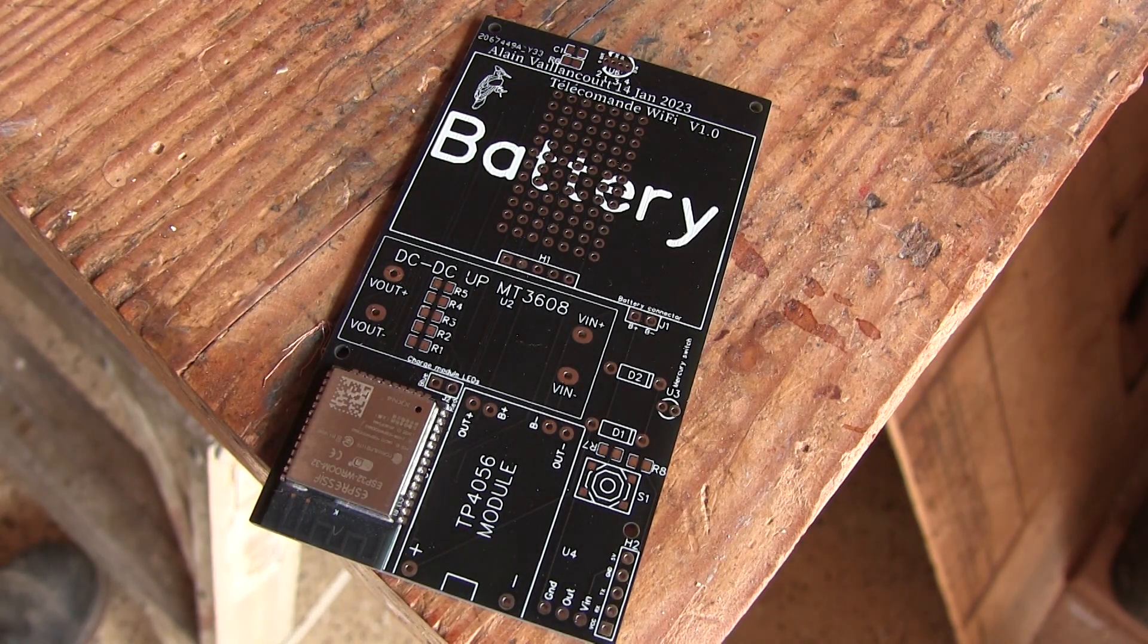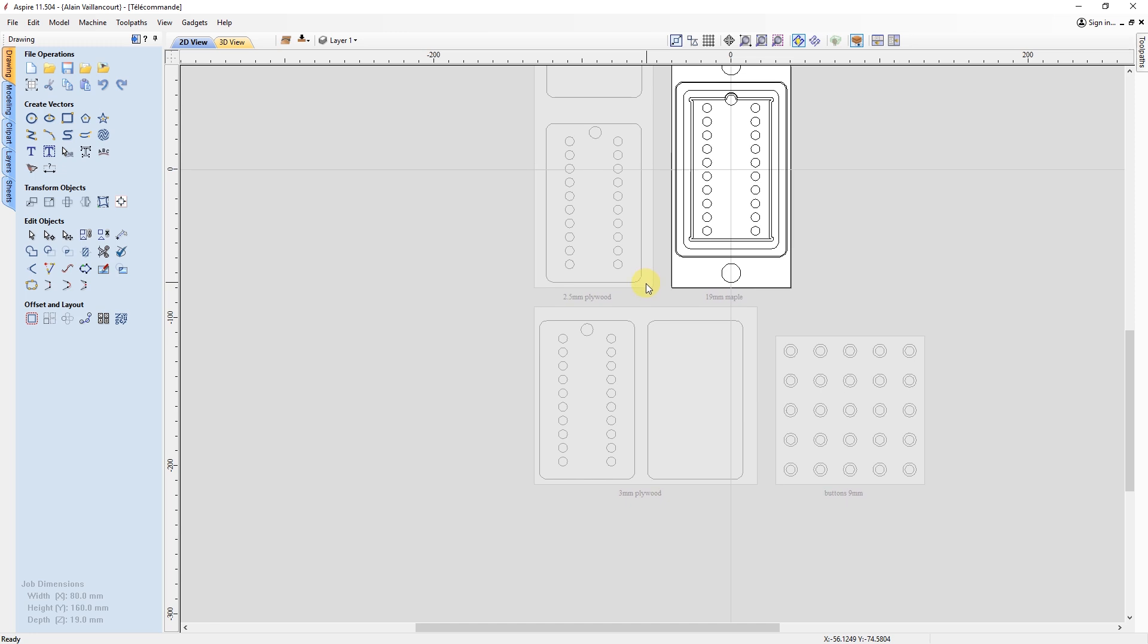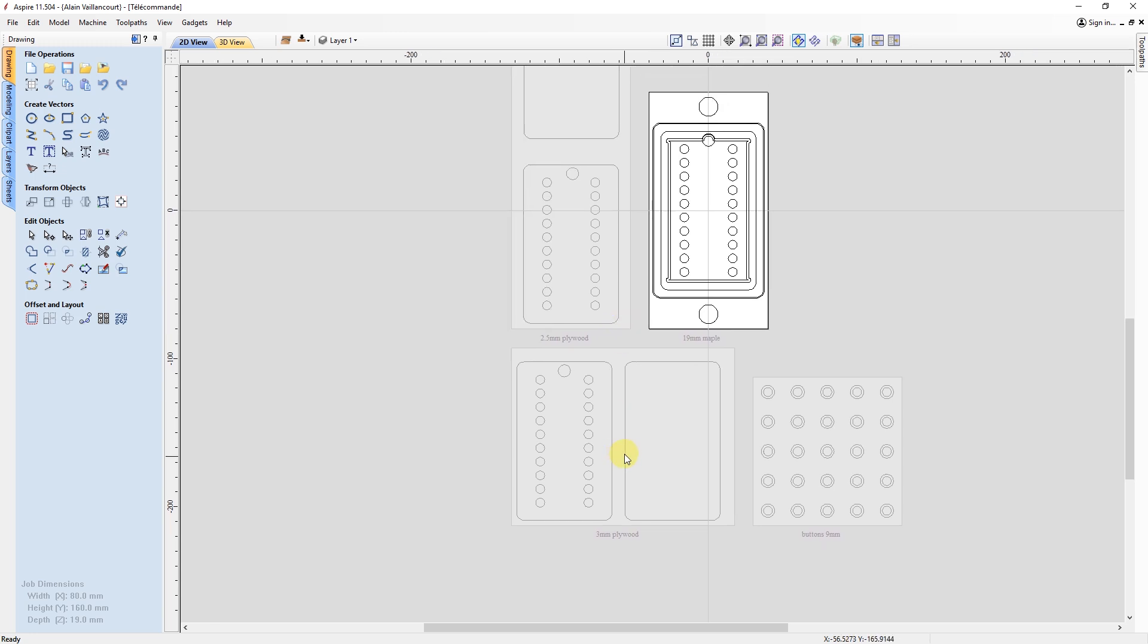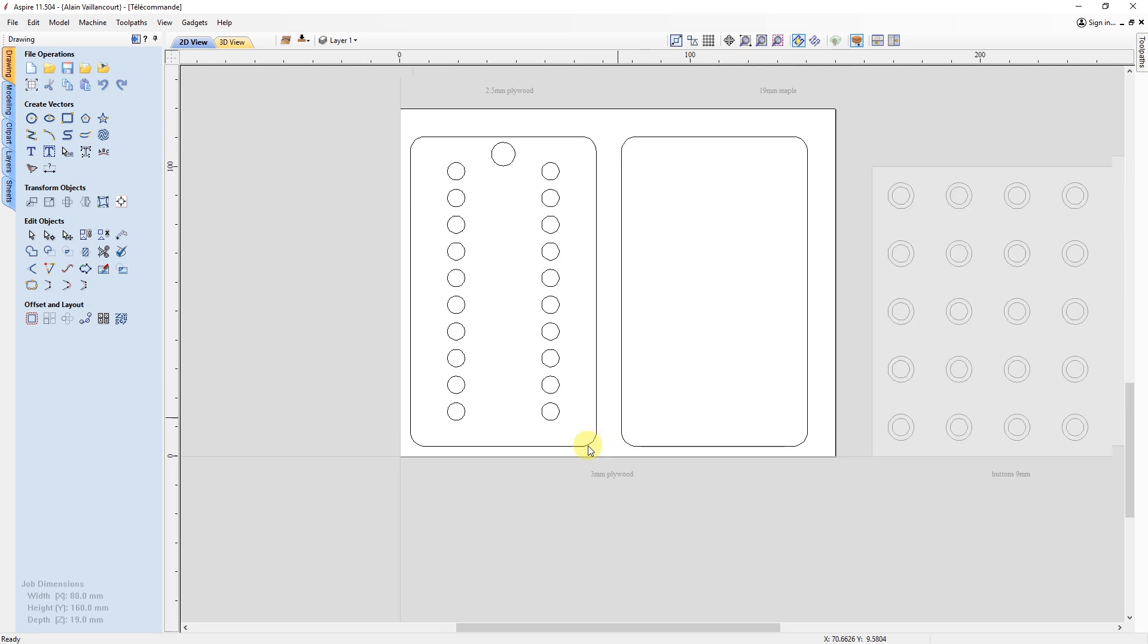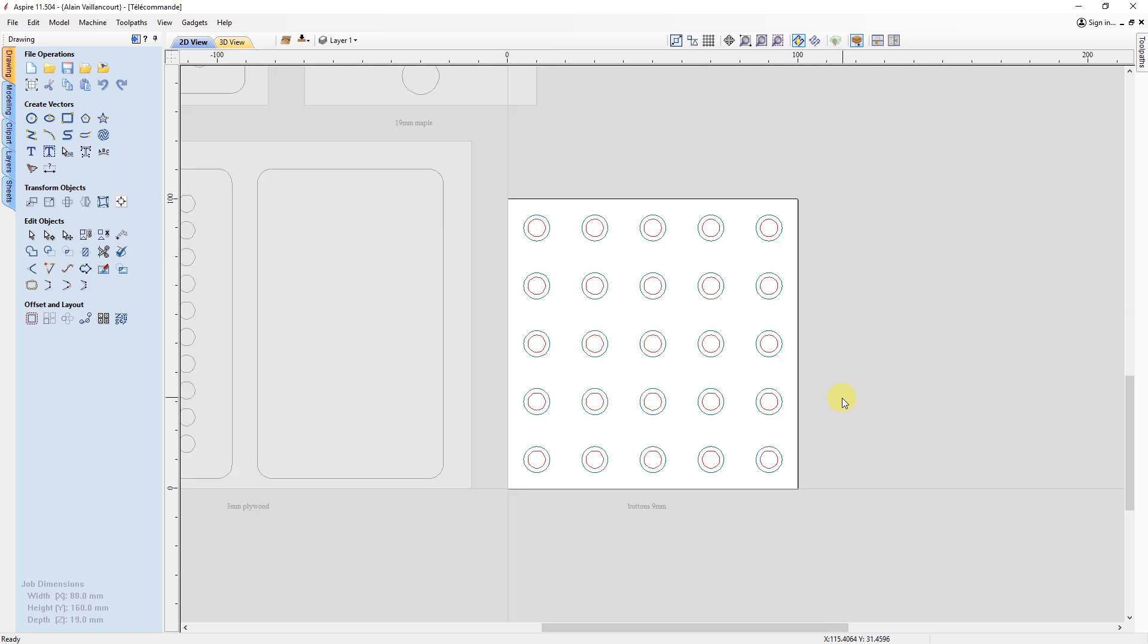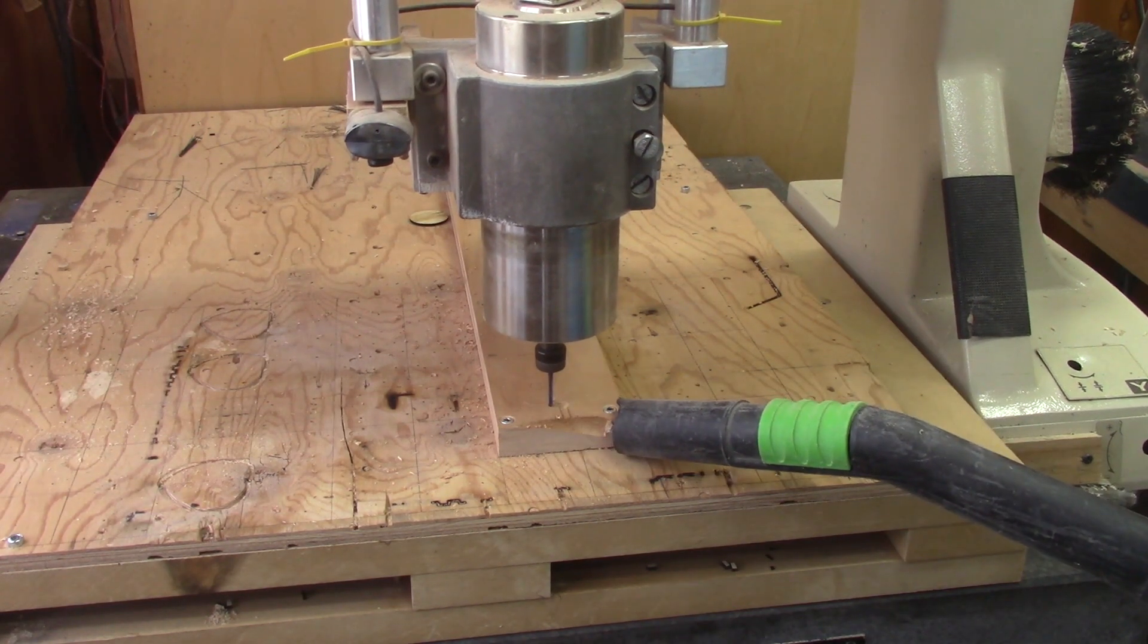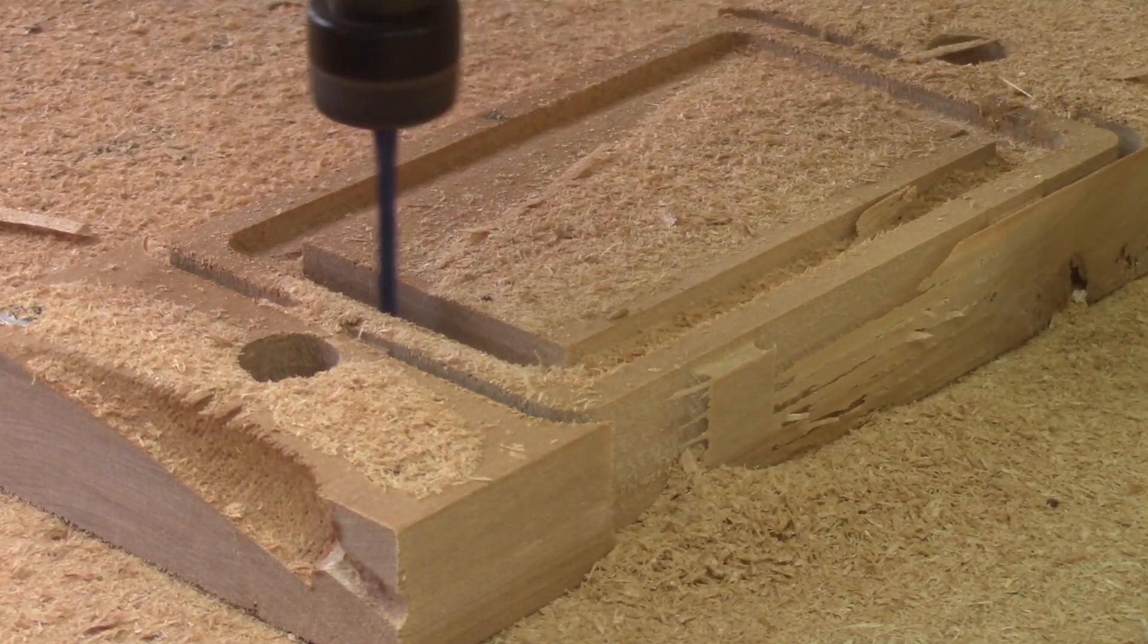I also need a box and for this, I go back to Aspire. I draw all the parts that I will need for my box on several sheets. The outside, the front and back, plus all the buttons. Now, it's time to cut this.